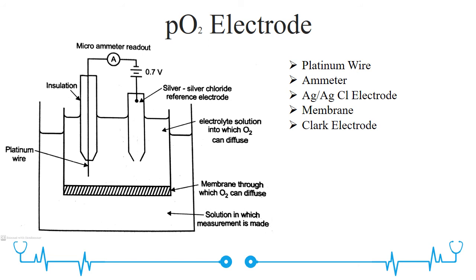The oxygen electrode is used to monitor the partial pressure of oxygen in biological fluids. Similar to the pH electrode, the oxygen electrode is available in an integrated version consisting of the platinum cathode and reference electrode in the same enclosure, called the Clark electrode.